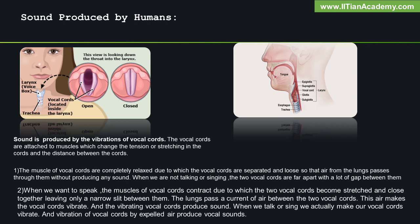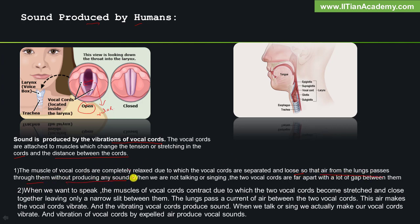In this slide, we see the mechanism of vocal chords for producing sound. Sound is produced by the vibrations of vocal chords. The vocal chords are attached to muscles which change the tension or stretching in the chords and the distance between them. In the vocal chord open case, the muscles of vocal chords are completely relaxed. Due to which, the vocal chords are separated and loose, so that air from the lungs passes through them without producing any sound.